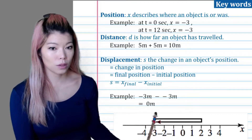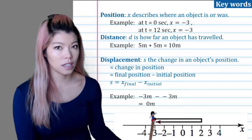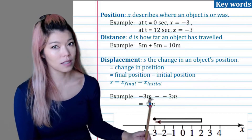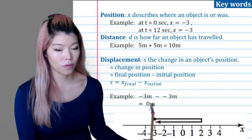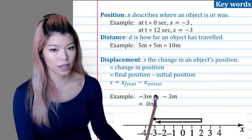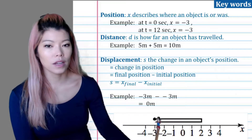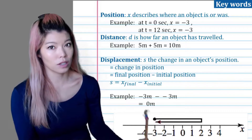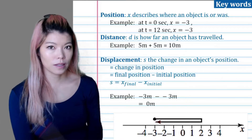How would you do it mathematically? We take the final position, which is negative three, minus the initial position, which is also negative three: negative three minus negative three is negative three plus three, which equals zero. Notice that it's different from distance — distance is how much she's gone, five and another five. Displacement is where she's at finally minus where she is initially. She ended up at the same spot, so the displacement is zero, but she has walked ten meters.